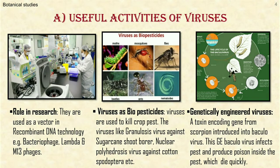Viruses as biopesticides. Viruses which selectively kill certain pests of crop plants are hence used as viral biopesticides. They are used to destroy the pests of agriculture, horticultural, and forest crops. The different viruses include granulosis virus and nuclear polyhedrosis virus. In India, sugarcane shoot borer is controlled by spraying granulosis virus suspension. Nuclear polyhedrosis virus is used against Spodoptera litura, a severe pest of cotton.